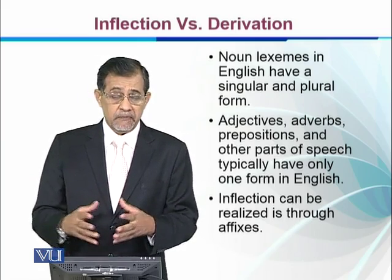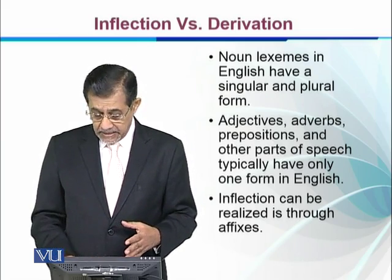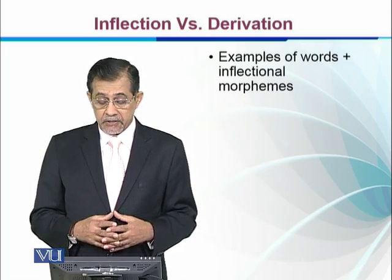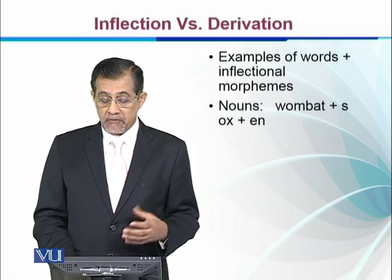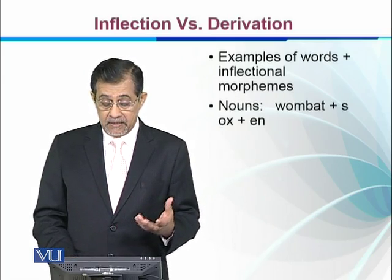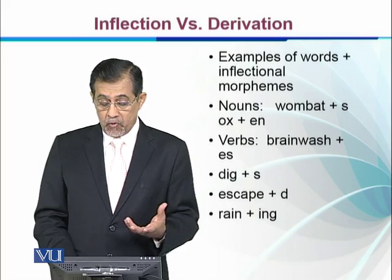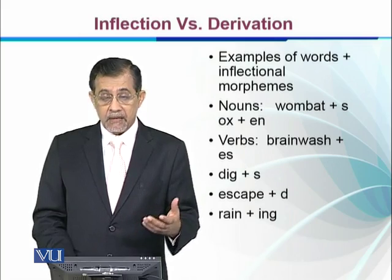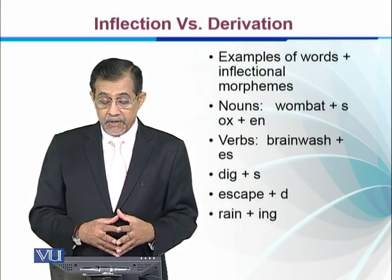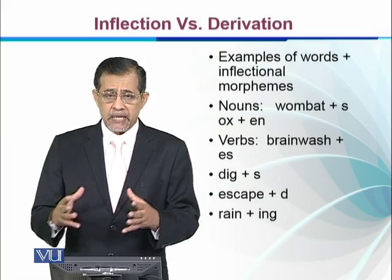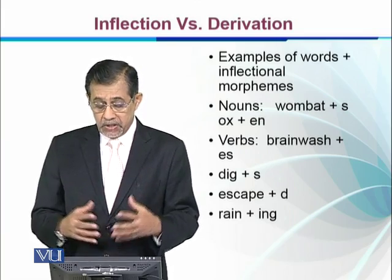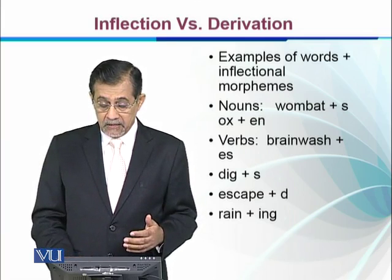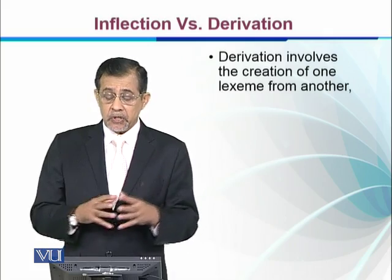Inflections can be realized in English through affixes. Examples of words with inflectional morphemes include: 'wombat' / 'wombats', 'ox' / 'oxen', 'brainwash' / 'brainwashes', 'dig' / 'digs', 'escape' / 'escaped', and 'rain' / 'raining'. These inflectional morphemes are used in different positions in a sentence for different grammatical functions.